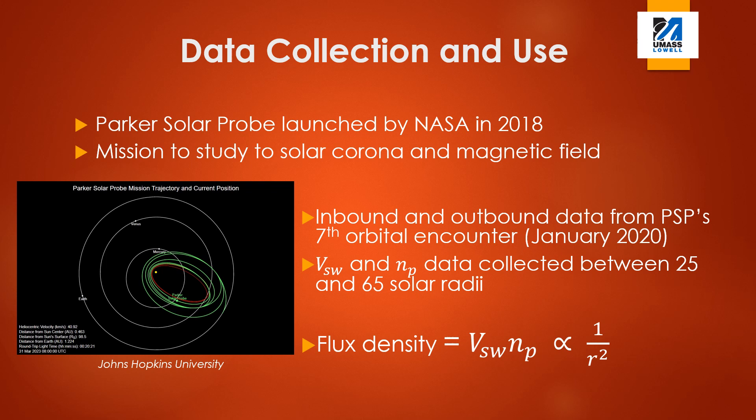We use radial velocity and proton density data collected by PSP in inbound and outbound segments over a heliocentric distance range from 25 to 65 solar radii to compare the solar wind mass flux density in particles per second per square meter with a scaled inverse square curve of R. Mass flux has units of particles per second and describes the total number of particles the sun emits per unit time. Mass flux density has units of particles per second per square meter and describes the number of particles passing through a unit of area in a unit of time.